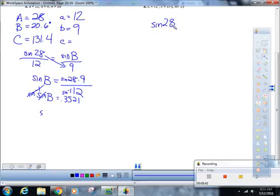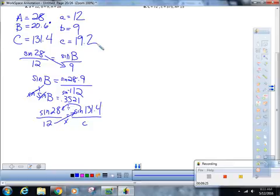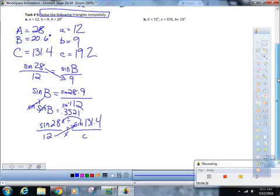So, now we just do the same thing. It'll be easier. Sine of 28 is to 12, like sine of 131.4 is to C. You cross, multiply, and divide. C is 12 times sine of 131.4 divided by sine of 28. I hope you guys can do that. And what do you get? 19.2. And does that answer make sense? Yes. And are you proud of yourself? Yes. Good.